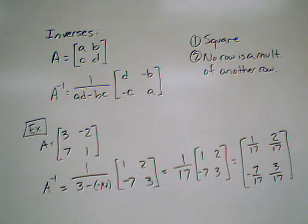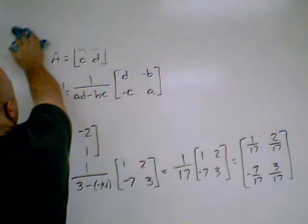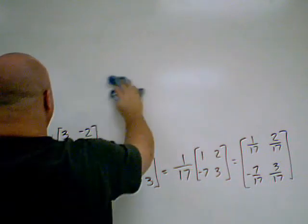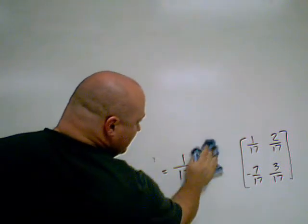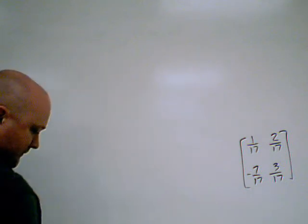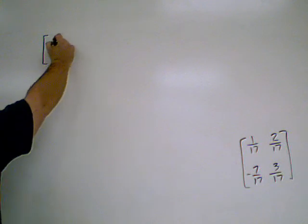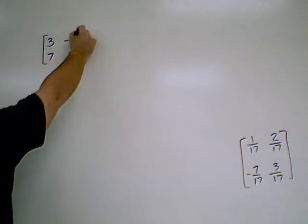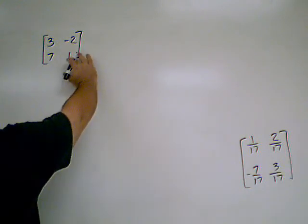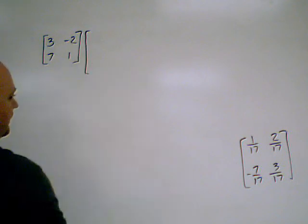Now, we're going to show you how to check it. You erase all of this. And all I'm going to leave is our inverse. Our original matrix, A, was 3, negative 2, 7, and 1.